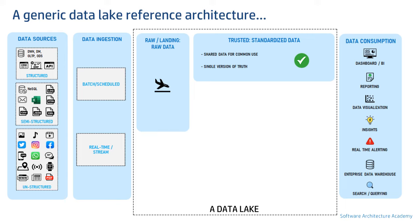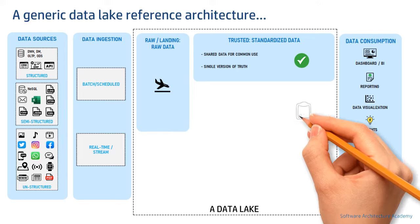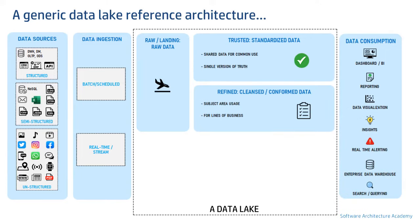The next layer is known as the refined zone. Data here is cleansed and confined to subject areas. Data is enriched as per different lines of businesses. This zone caters to dedicated use cases for a small segment of users or businesses within an enterprise — simply put, for line-of-business use cases. Business context is applied to the data here.